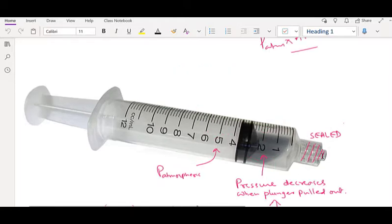When the right end is sealed, the pressure decreases when plunger is pulled out. On the left side, the pressure remains atmospheric pressure.